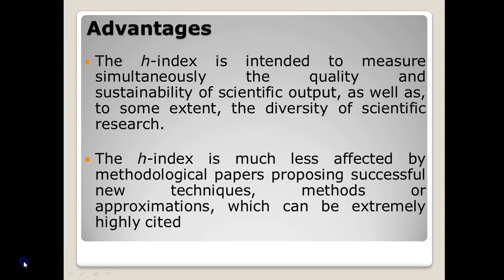For example, if a researcher has published one good paper that has been cited 10 times, but the same researcher has 9 more papers with no citations at all, then the H-Index for this researcher is only 1. This means H-Index motivates researchers to keep on publishing good work to increase their H-Index value. Increasing citations on a single paper alone does not increase the H-Index value.